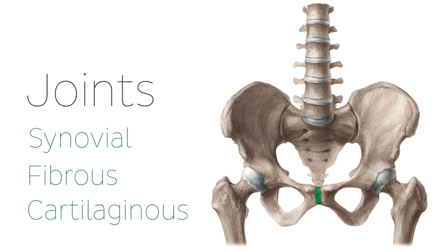And cartilaginous joints, which are joints that are connected entirely by cartilage, either hyaline or fibrocartilage. They typically have less movement than synovial joints and more movement than fibrous joints, and you can see an example of this on the right in the pubic symphysis.